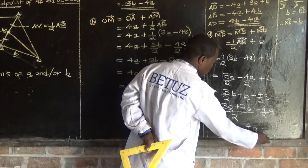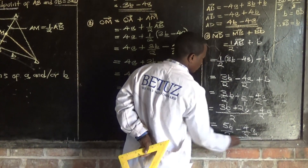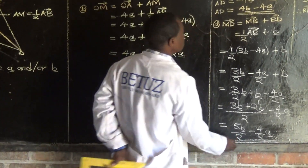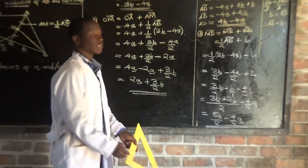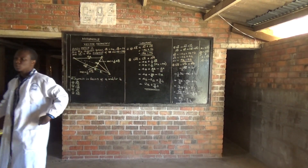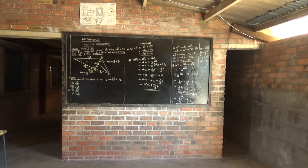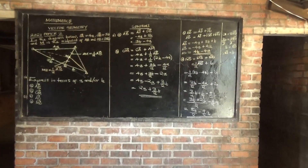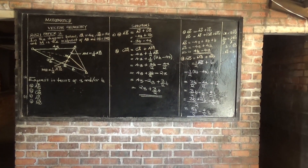So 3 vector b plus 2 vector b equals 5 vector b. Therefore MD equals 5 vector b over 2, minus 4 over 2 vector a. This is your answer.